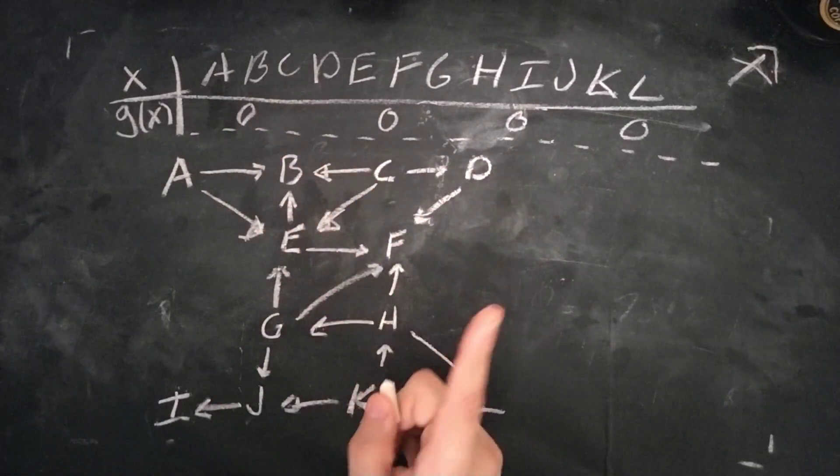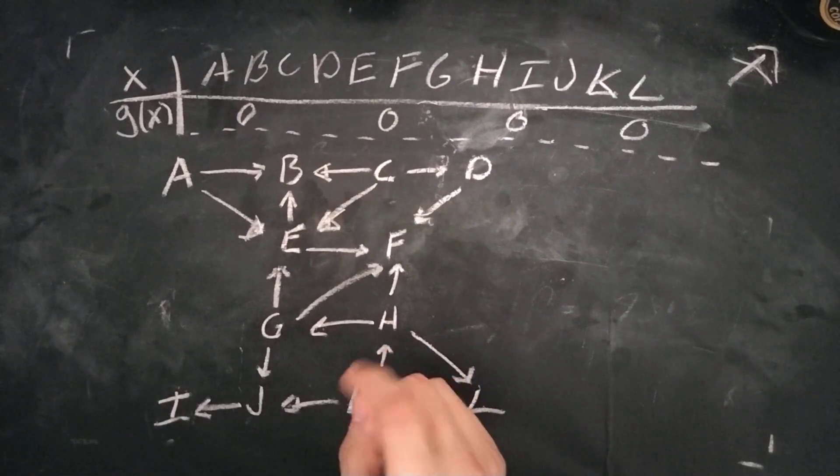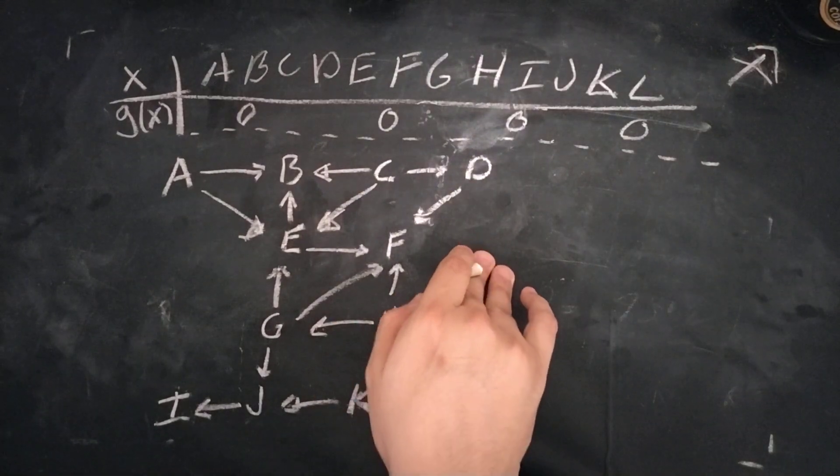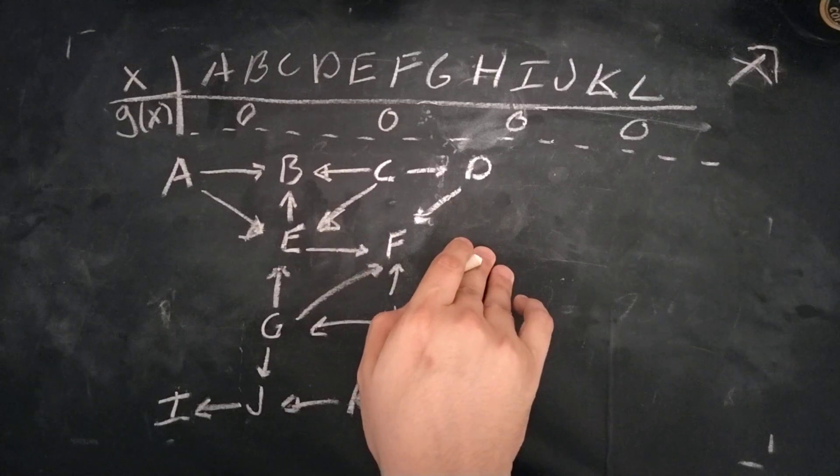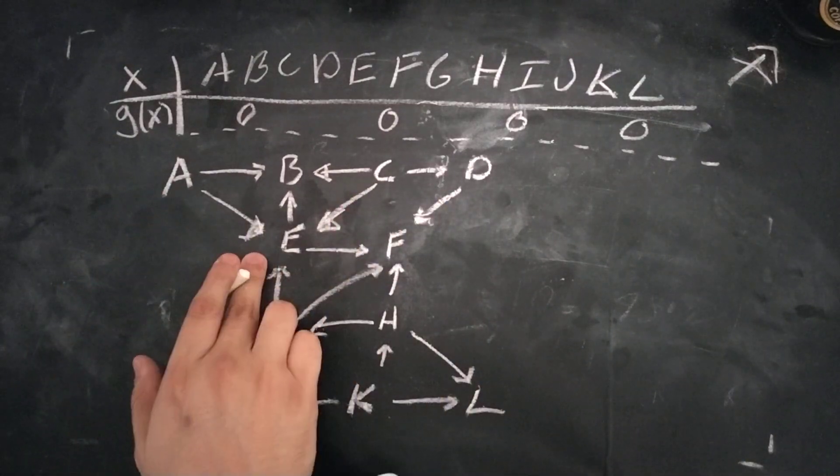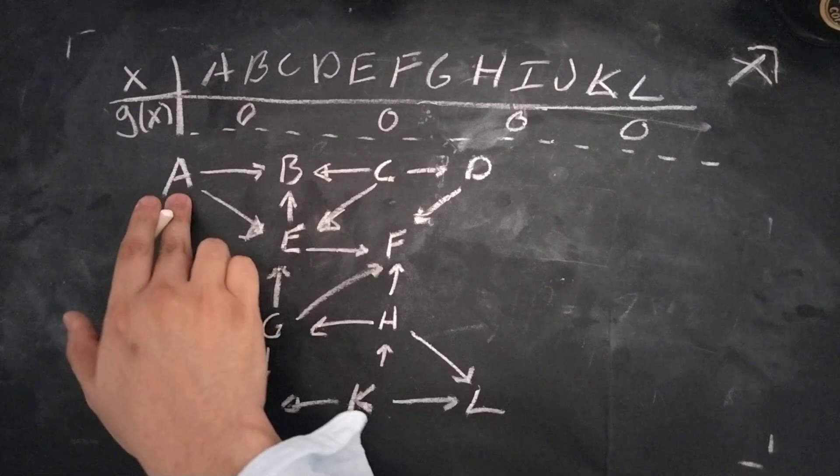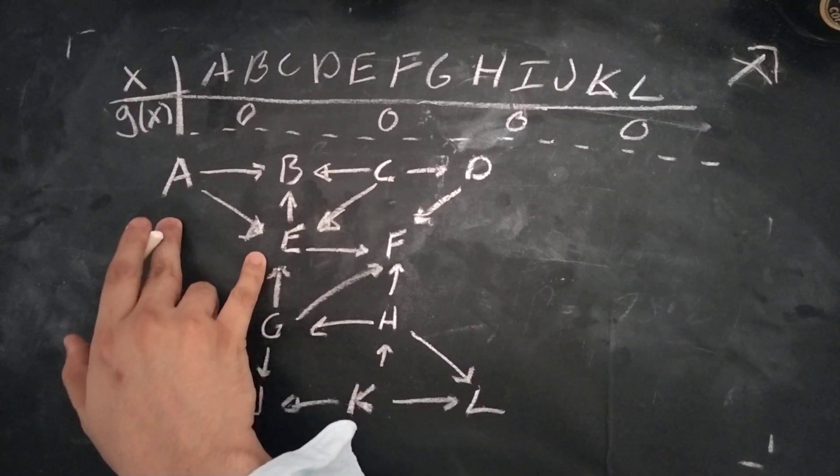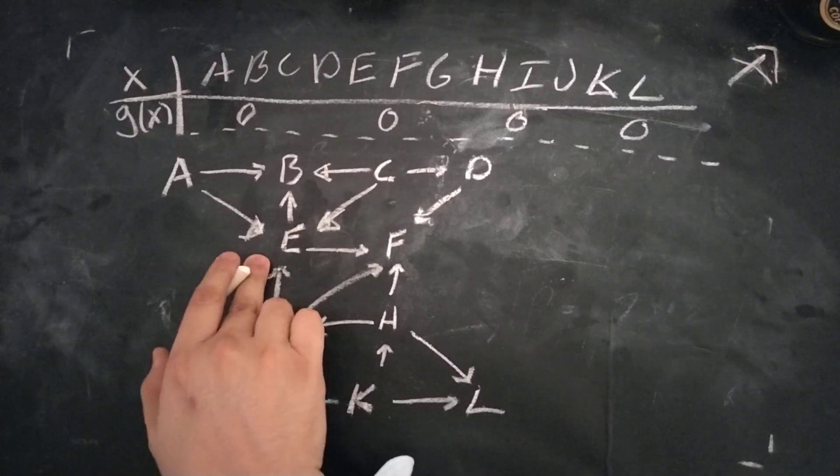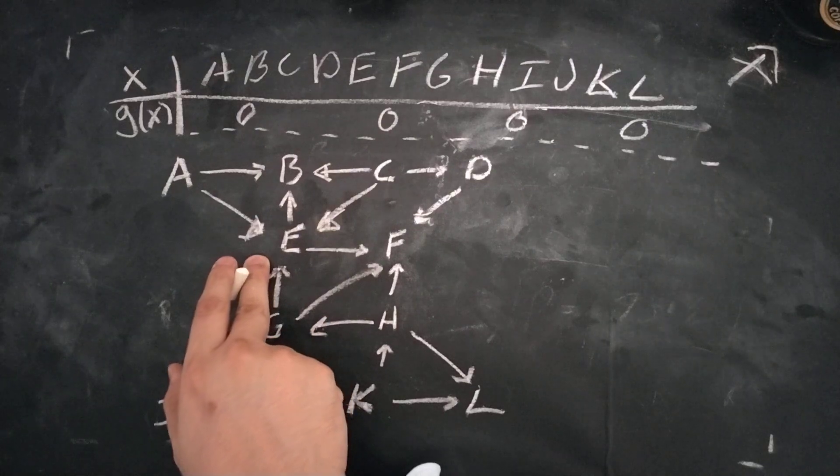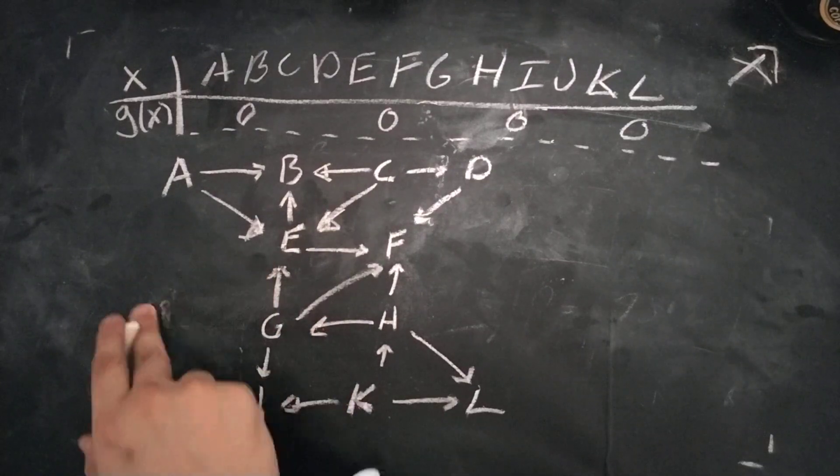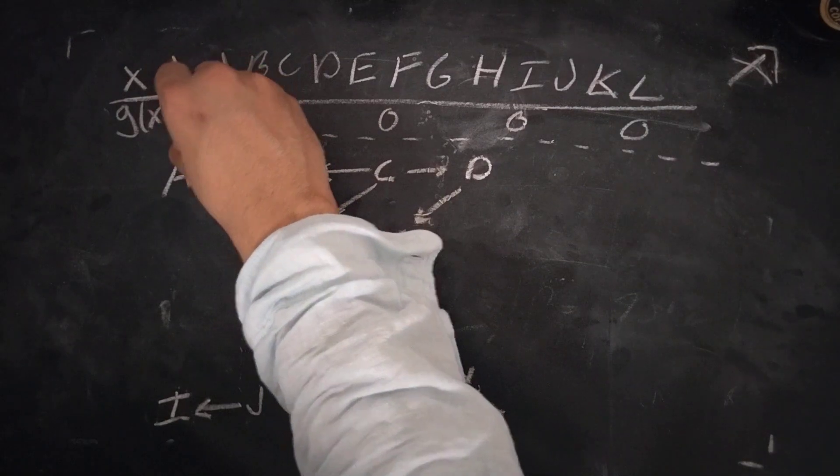Now, there's also another condition for the Sprague-Grundy function, which is that if you can also move to a position, such as from A to E, where you don't necessarily put the opponent in a losing position, you also add another value. So A is actually 2.